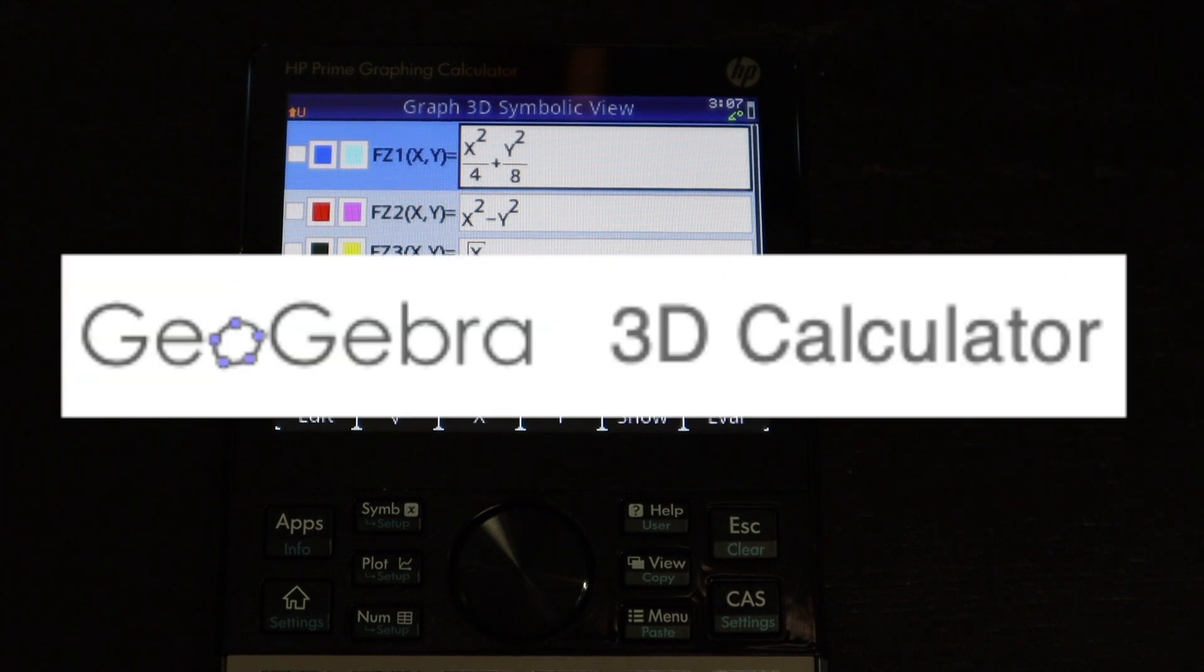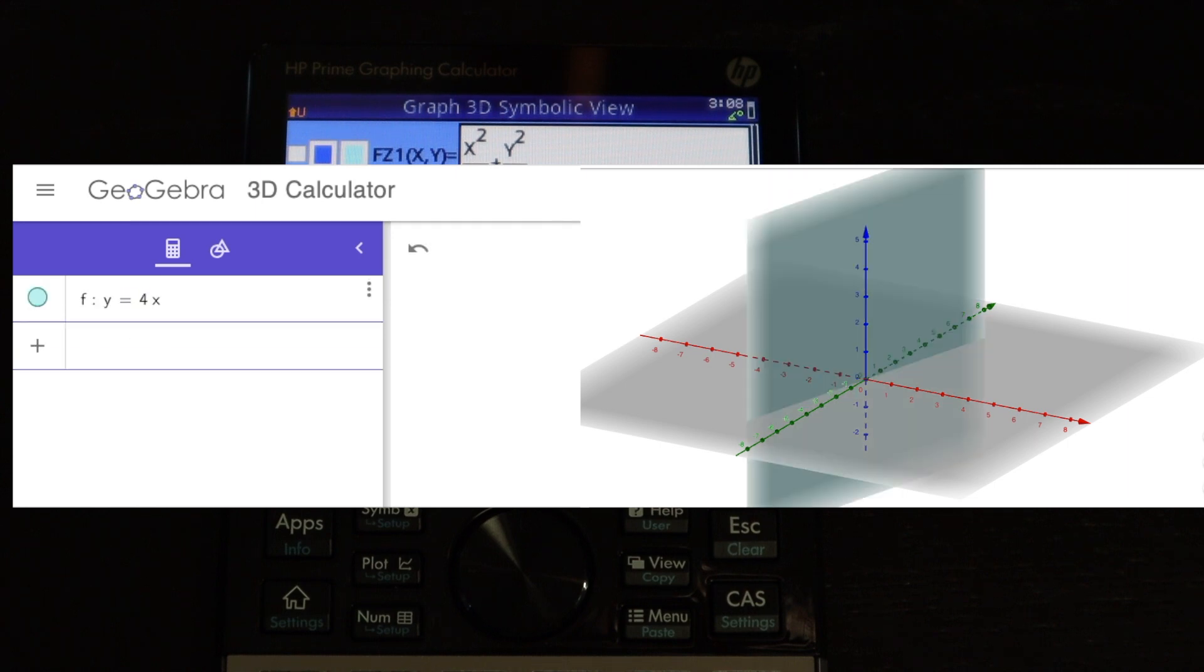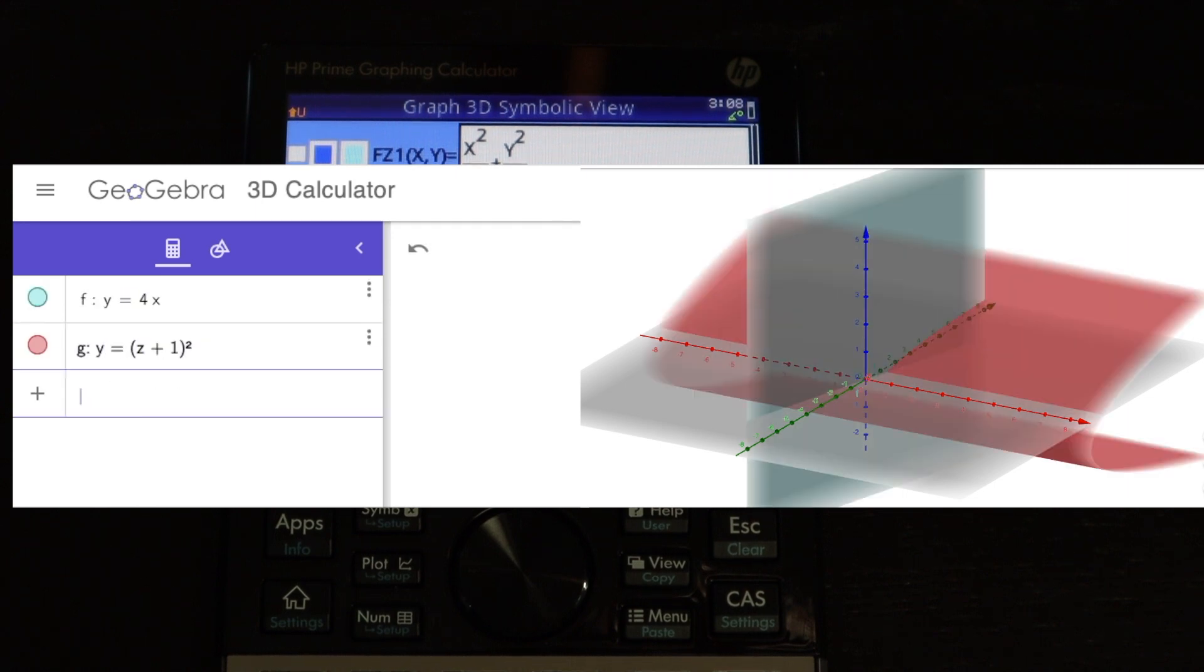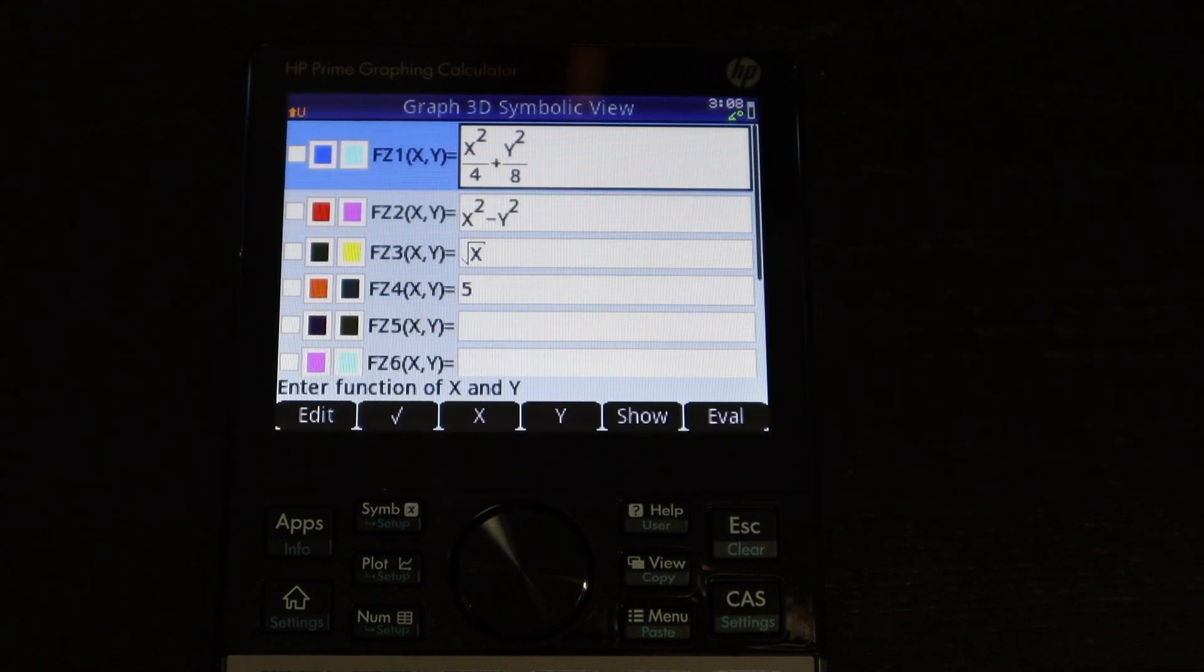There are some websites, for example, that will do that. You can just type in any function and it will graph a function no matter what form it's in. But you can't do that on the HP Prime. You have to put it in z equals form.